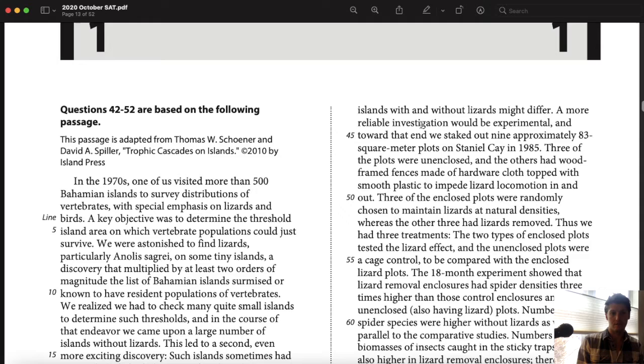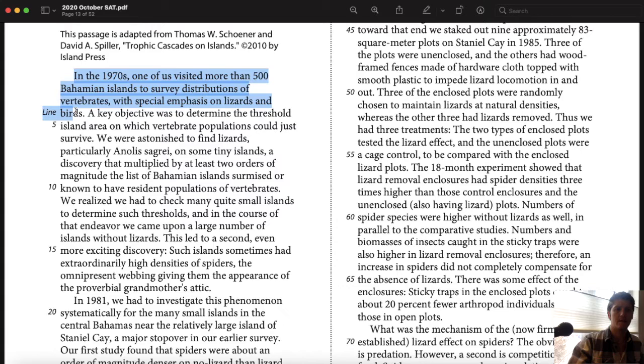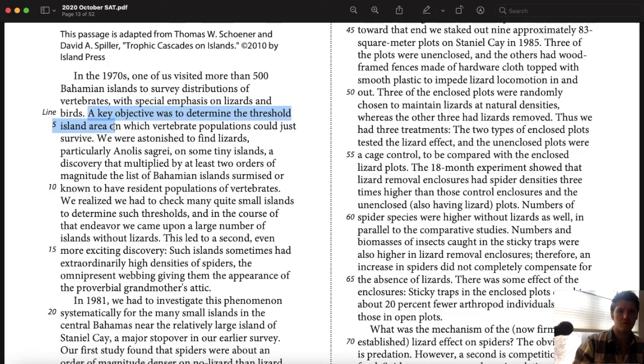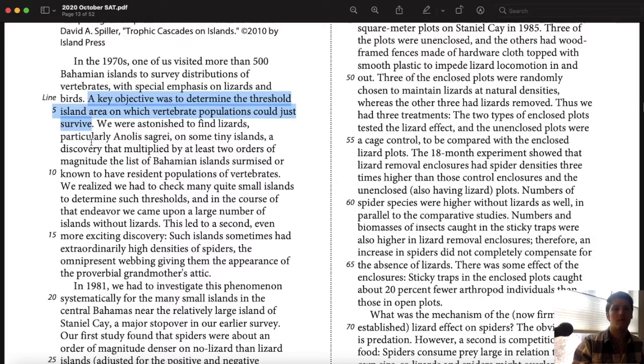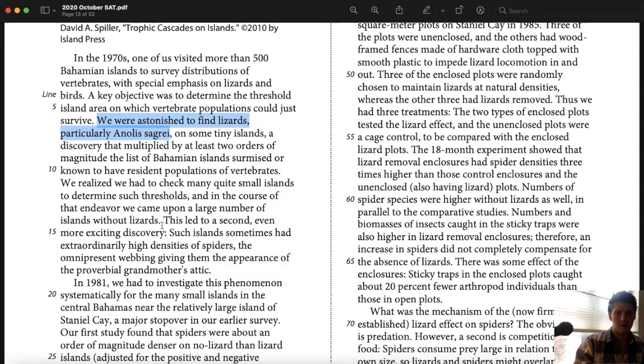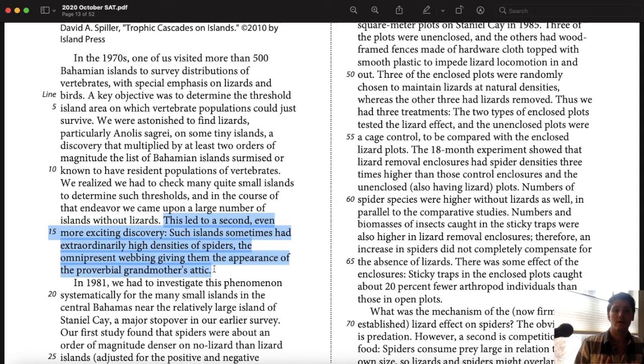Let's jump right in with this passage, which is called Trophic Cascades on Islands. You should always read the introduction. Let's read key spots here. In the 1970s, one of us visited more than 500 Bahamian islands to survey distributions of vertebrates with special emphasis on lizards and birds. A key objective was to determine the threshold island area on which vertebrate populations could just survive. I would stop here. This led to a second, even more exciting discovery. Such islands sometimes had extraordinarily high densities of spiders, the omnipresent webbing giving them the appearance of the proverbial grandmother's attic. So something about lizards, something about spiders.